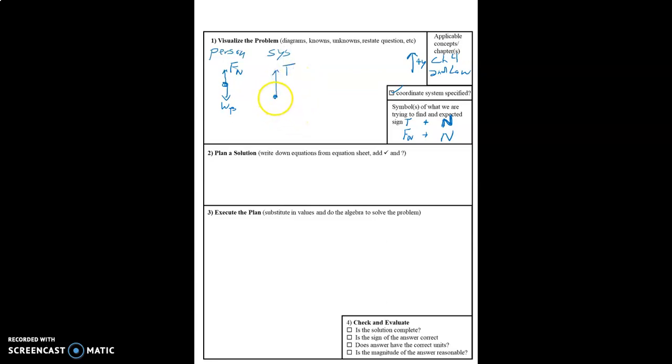So we'll draw a free body diagram of the system. Acting on the system, there is tension. And then there's the weight of the system, which includes the person's weight and the elevator's weight.